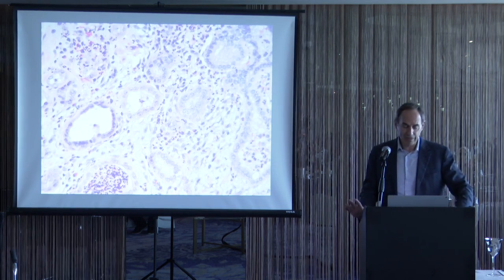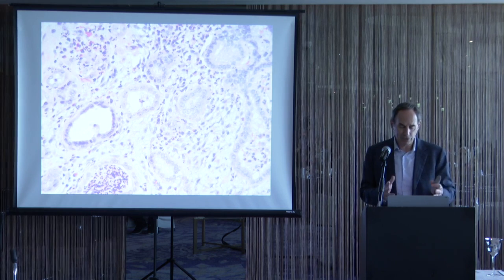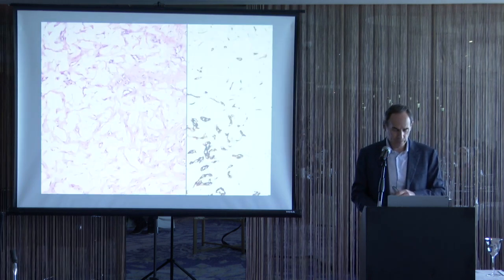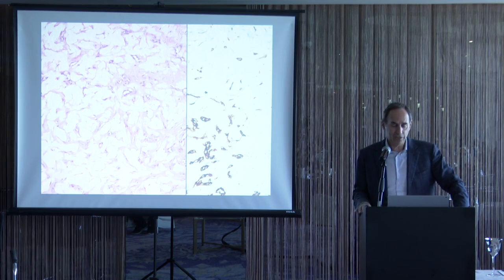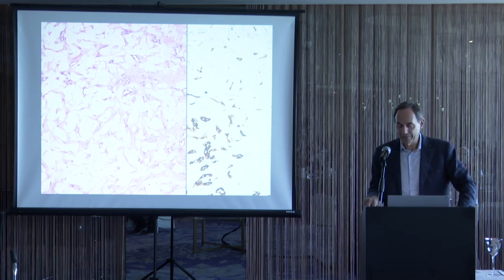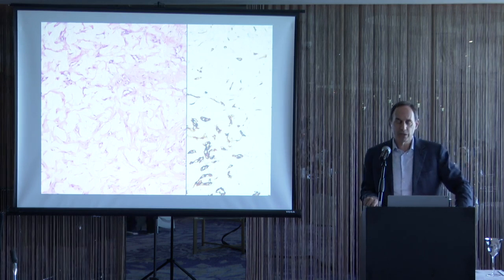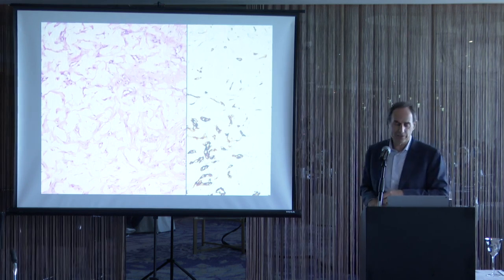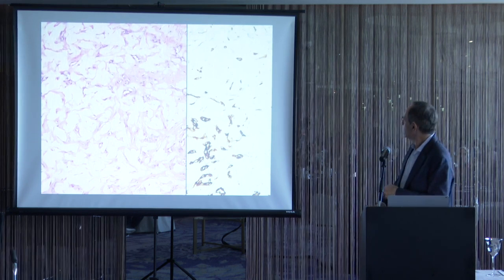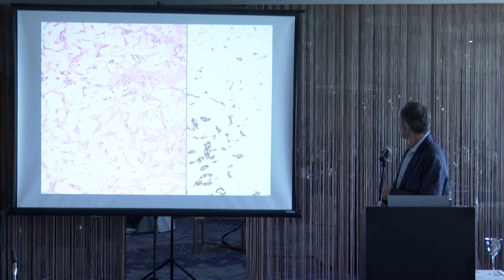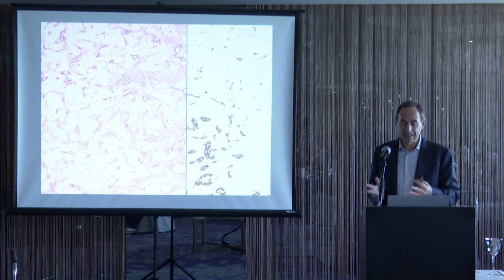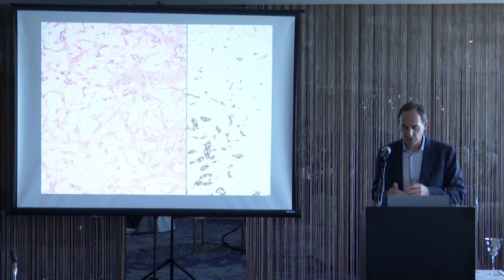Nephrogenic adenoma always occurs within an inflammatory background. In the prostatic urethra, this is helpful because prostate cancer typically lacks admixed inflammation. There is also an unusual fibromyxoid variant of nephrogenic adenoma — first described by this group — where nephrogenic adenoma sits within a bluish hyaline matrix. Initially you may not recognize the lesion, but slit-like spaces are present and keratin staining highlights compressed tubules within the fibromyxoid stroma; these are PAX8-positive.